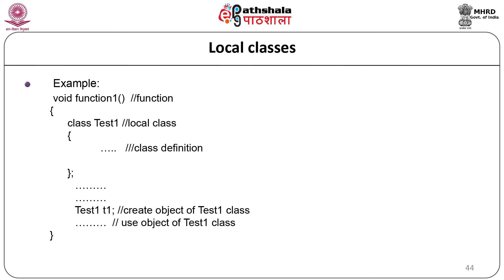Example of local class syntax: `void function1()` contains `class test1` - this local class is declared and used within the function. Object `test1 t1` is created and used inside the enclosing function. The class `test1` is surrounded by the local function `void function1`.